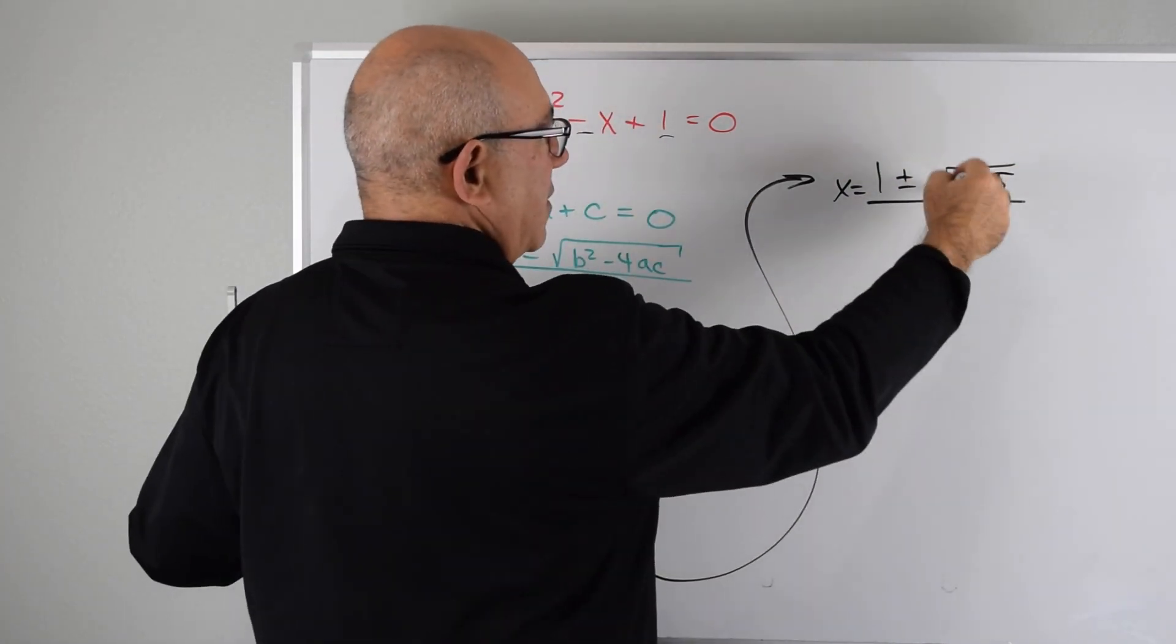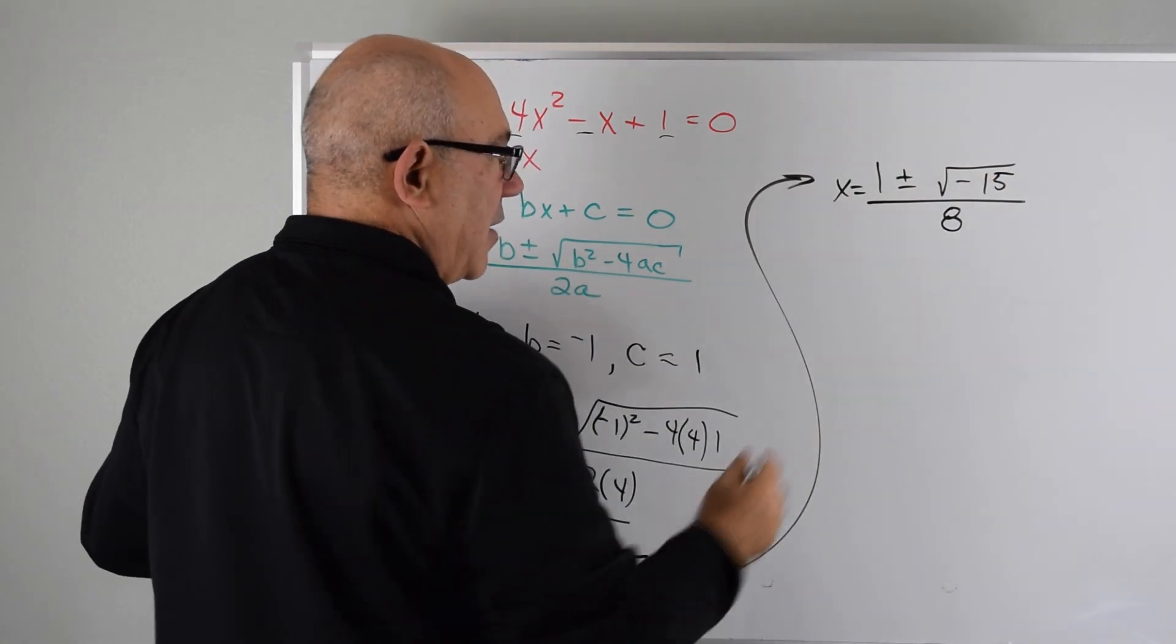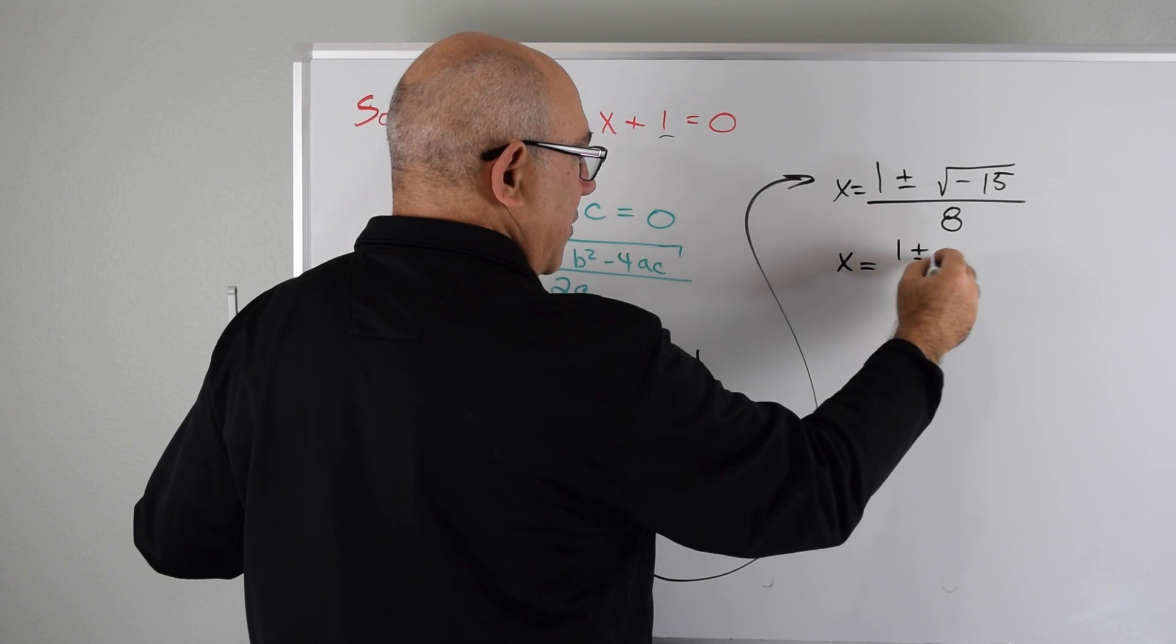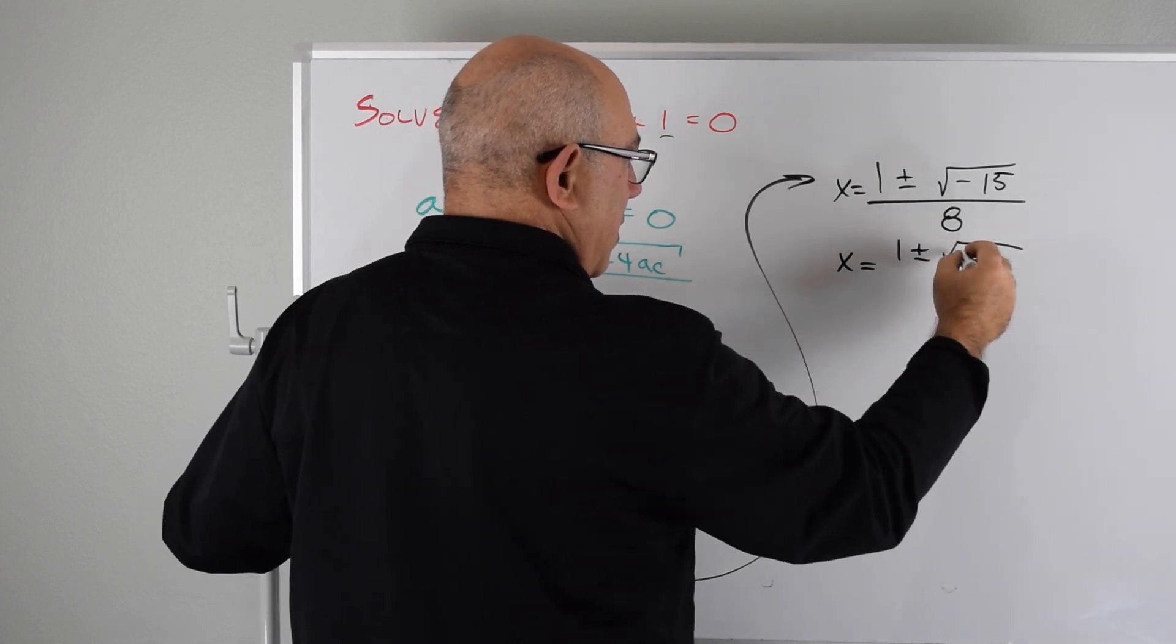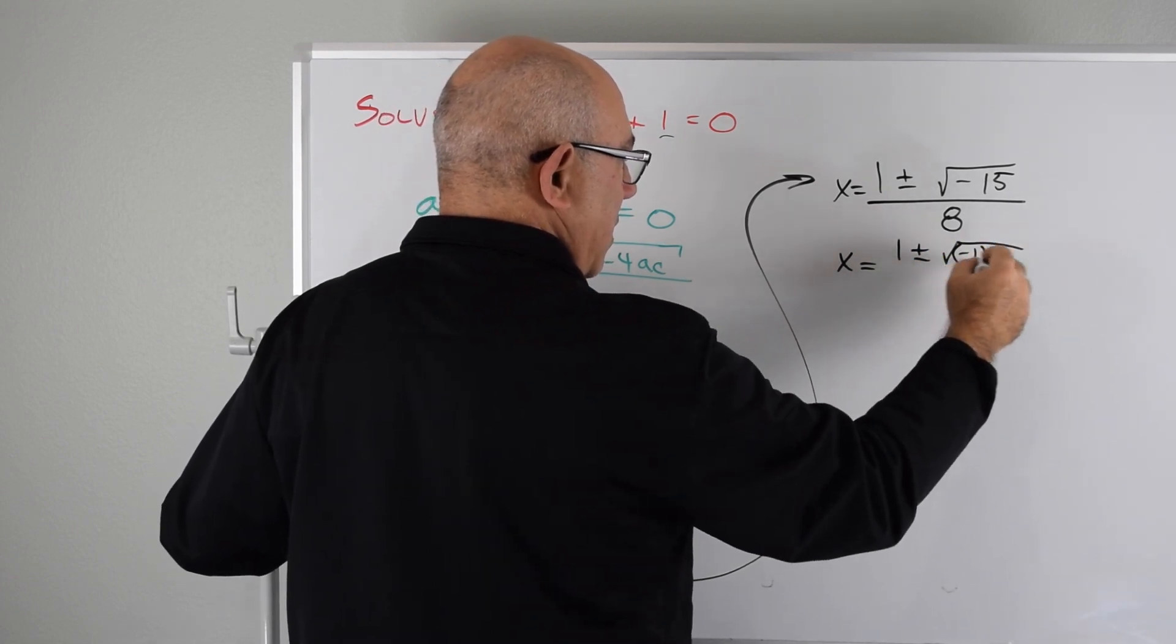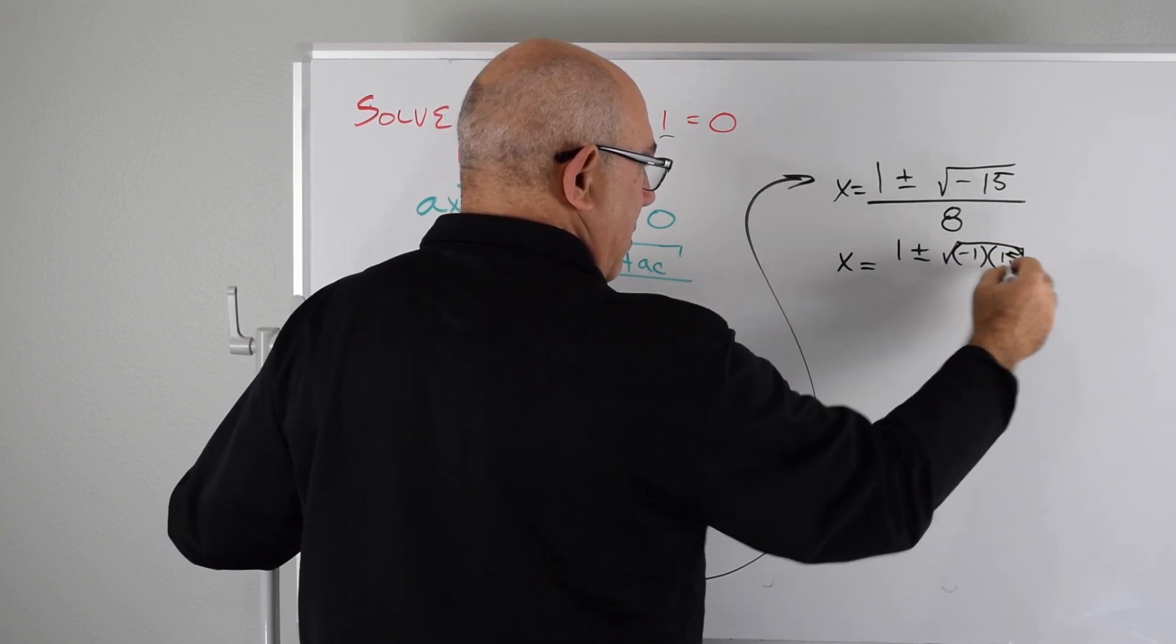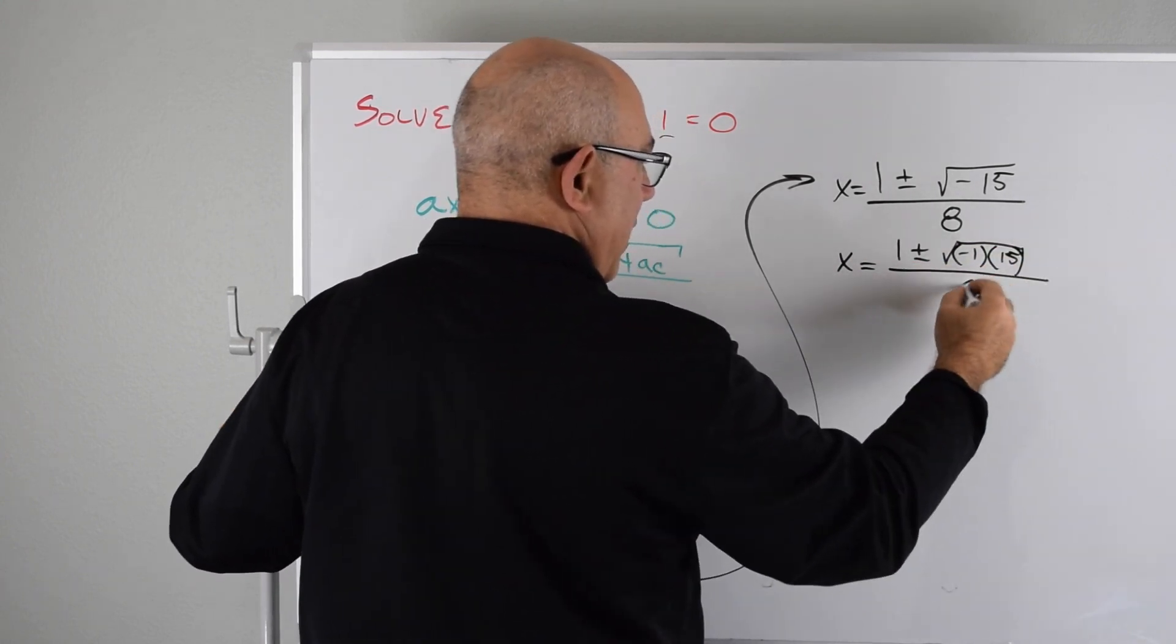Now, we have to deal with this -1 here under the radical, so the way we're going to do that is we're going to say it equals plus or minus the square root of -1 times 15, and then we'll have 8 here.